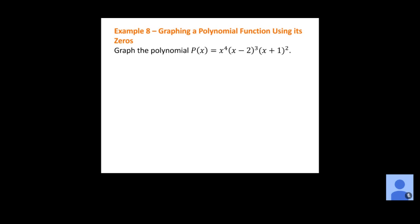How would we find the degree of this polynomial? So if you think about it, we have this first term, which is x to the fourth power. This piece is going to give us x to the third power, and then this one is going to give us x squared. If we were to multiply all of that together — x to the fourth times x cubed times x squared — we would add all of those exponents together.